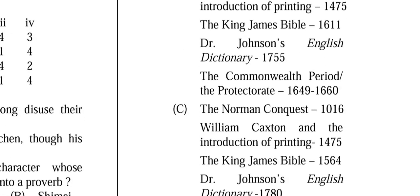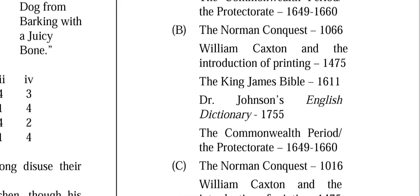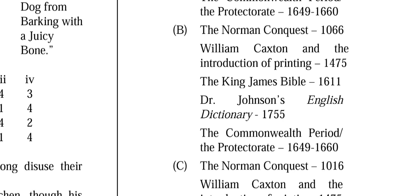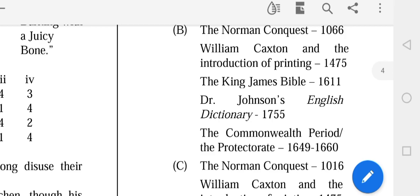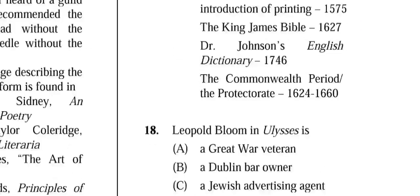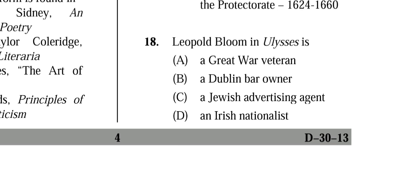Question 17: Identify the correct match set. The correct answer is (B): Norman Conquest — 1066; William Caxton and the introduction of printing — 1475; King James Bible — 1611; Dr. Johnson's English Dictionary — 1755; the Commonwealth Period/Protectorate — 1649–1660. Please remember these dates if you're preparing for NET English.